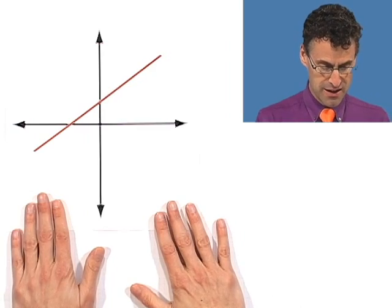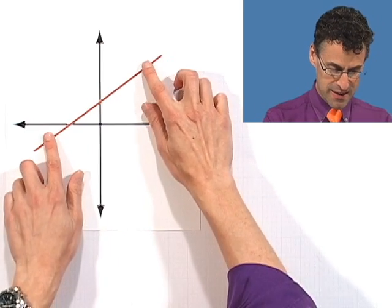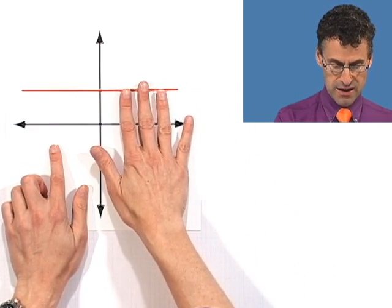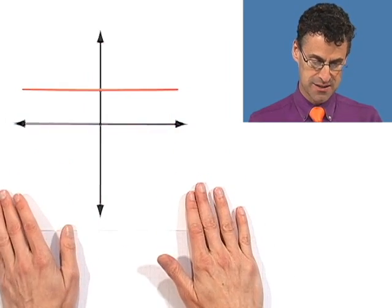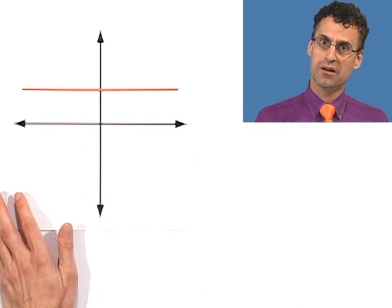Sure, we've all seen this kind of line, but what about a line that looks like this, namely a line that is parallel to the x-axis. Well, that's an example of what's called a horizontal line, obviously, because it's horizontal.